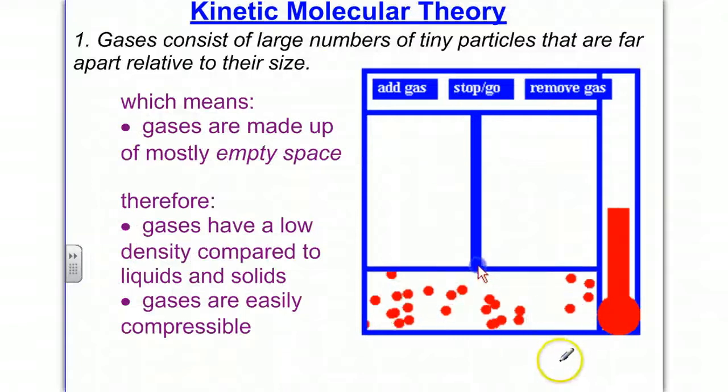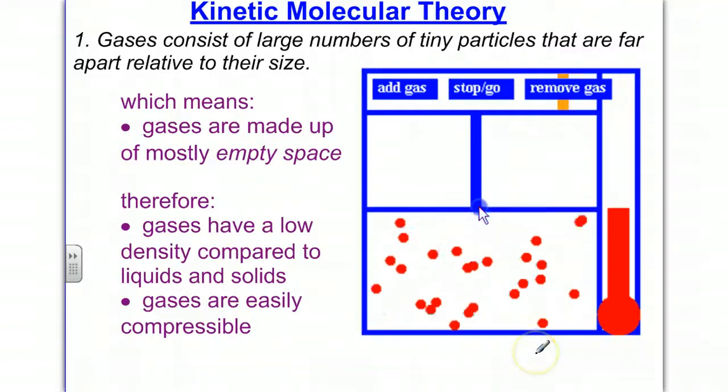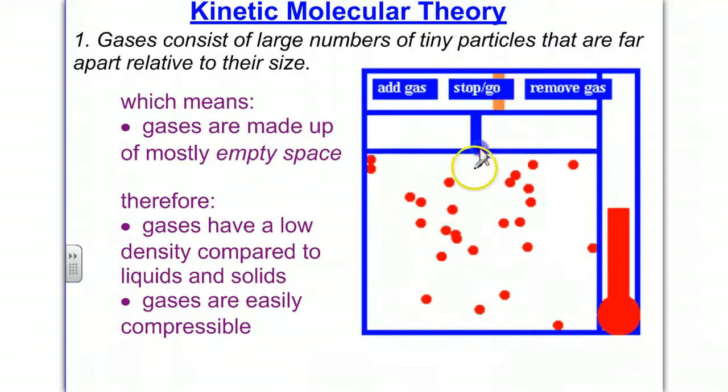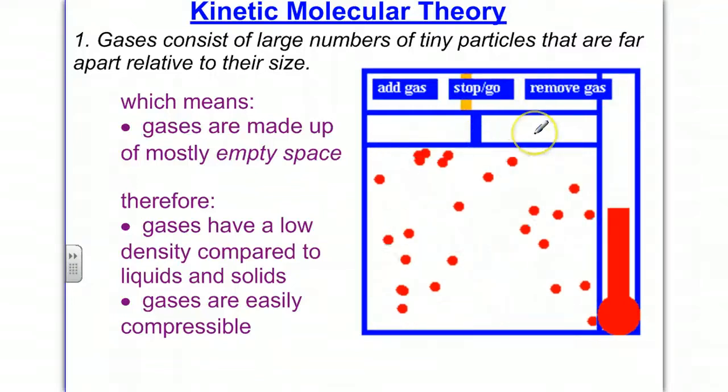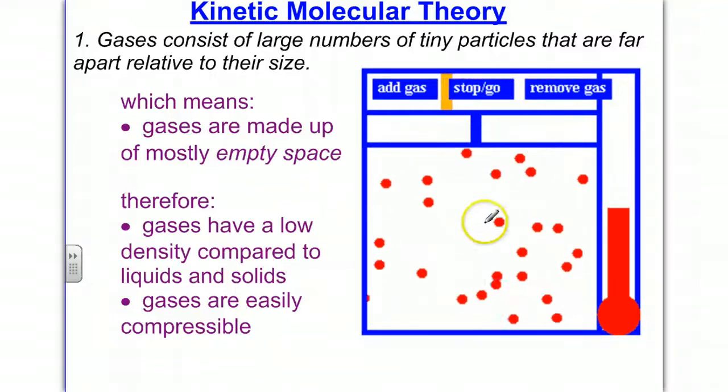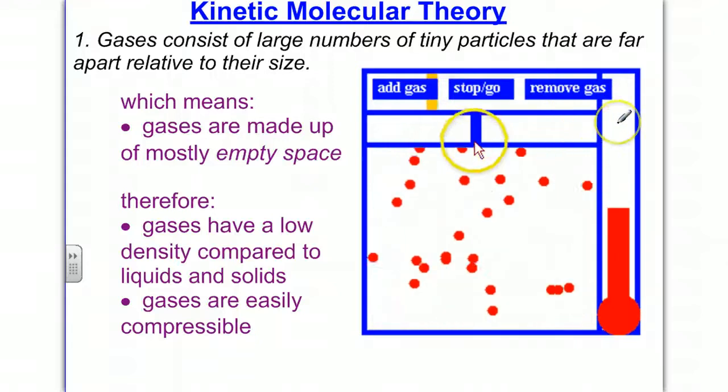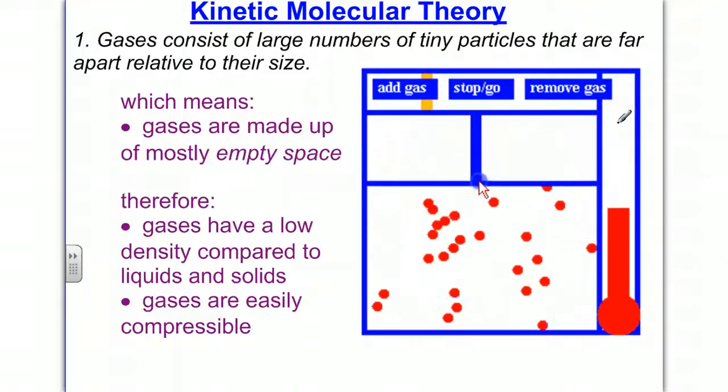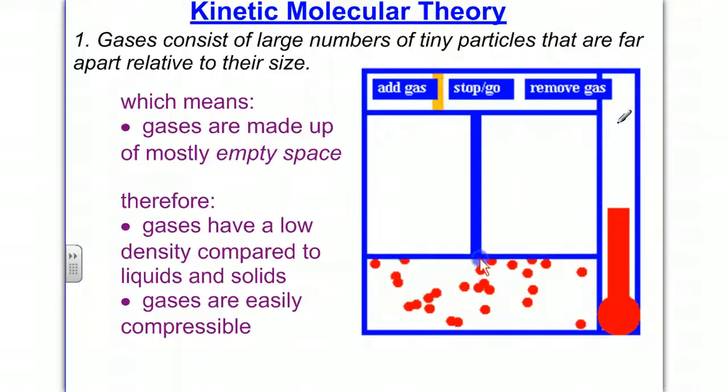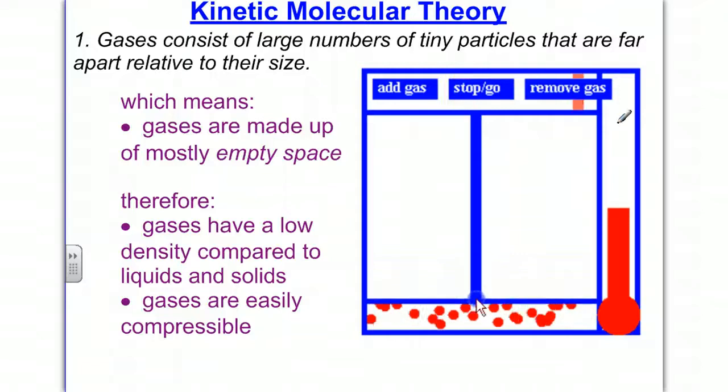For example, if we look at this animation, we can see that right now it's decompressing the gas, and the gases have all this empty space between them. However, this allows us to compress the gas or make the volume less. By giving it less volume, the gases are compressed together with less space to move around. Therefore, we've increased the pressure on the gas.